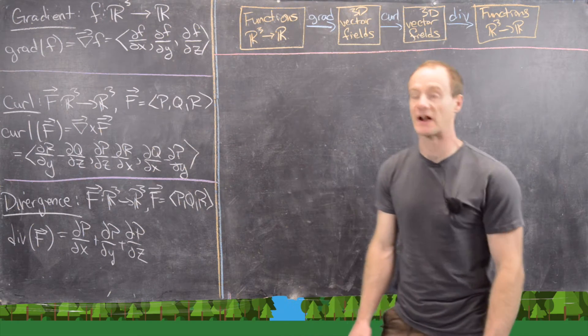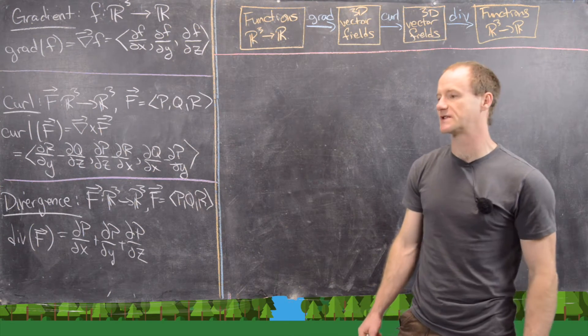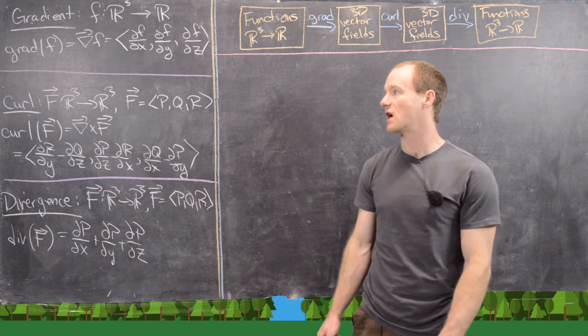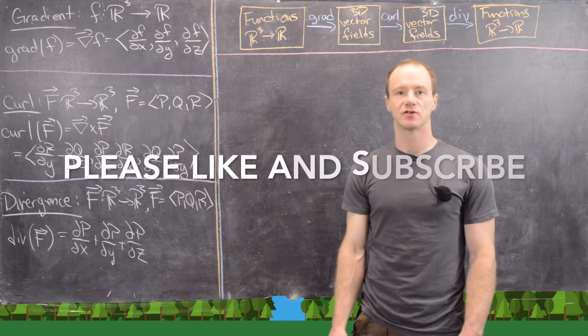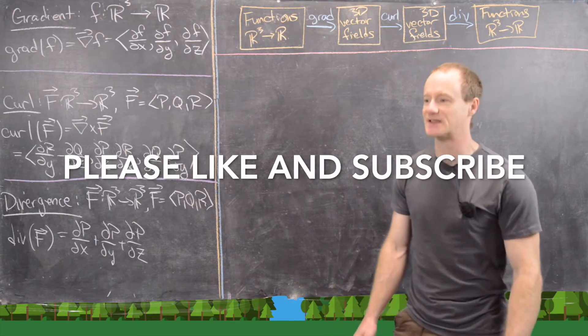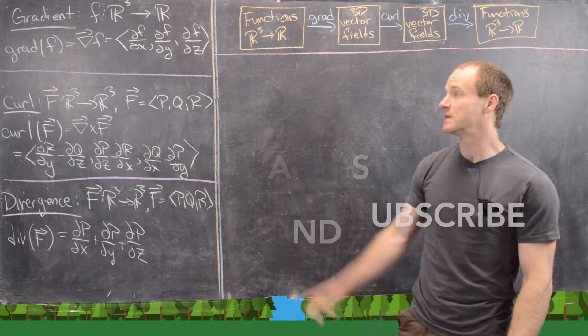In a previous video about the vector form of Green's theorem, we briefly looked at the notions of divergence and curl, and so we want to revisit that today.